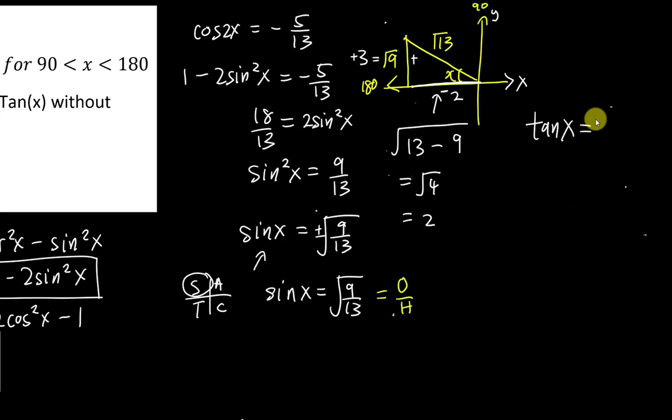Okay? So opposite will be 3. And then adjacent will be negative 2. So my final answer, I will just say, is negative 3 over 2 for tangent x.